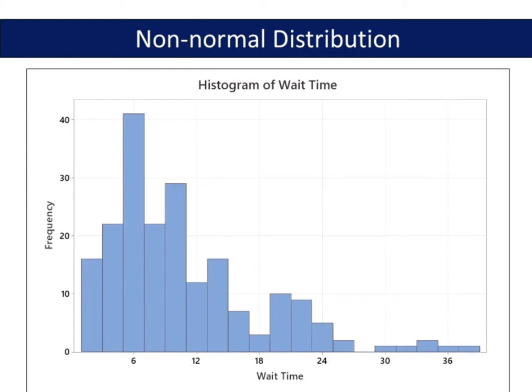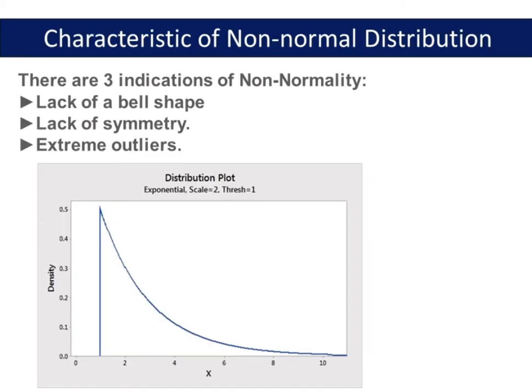However, normally distributed data isn't always the norm. Some measurements naturally follow a non-normal distribution. Consider wait times at a bank or customer waiting times at a call center, where it's not possible to wait a negative amount of time. Besides, in transactional or service processes, we often deal with lead time data, and usually that data does not follow the normal distribution. There are three indications of non-normality: lack of a bell shape, lack of symmetry, and extreme outliers.